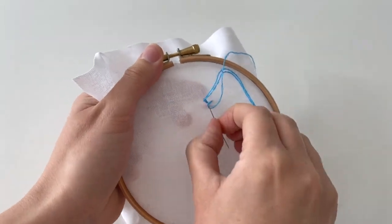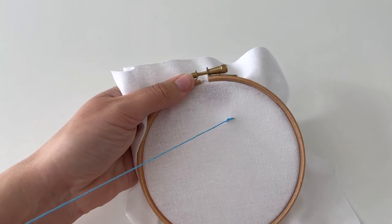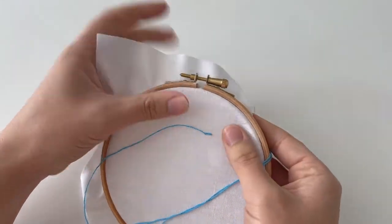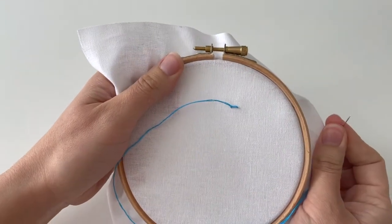You need to pull it through in the direction of the line, so you'll see that I'm going from right to left here. You can obviously work from left to right if you'd rather. And gently pull it through and then you end up with like a little knot.